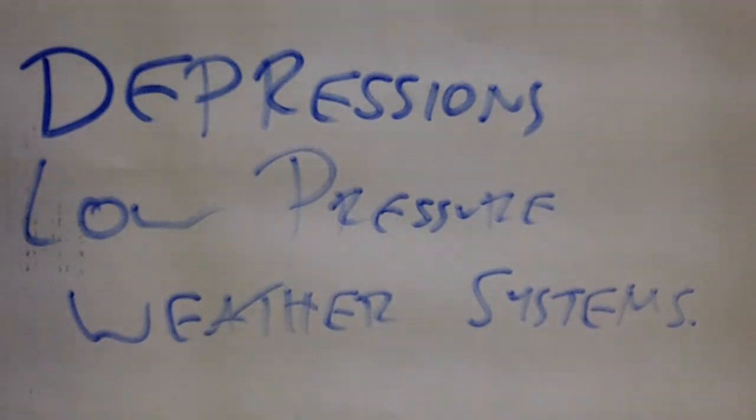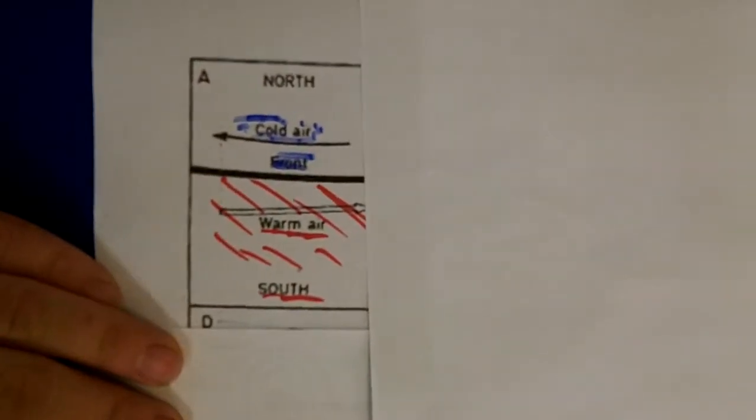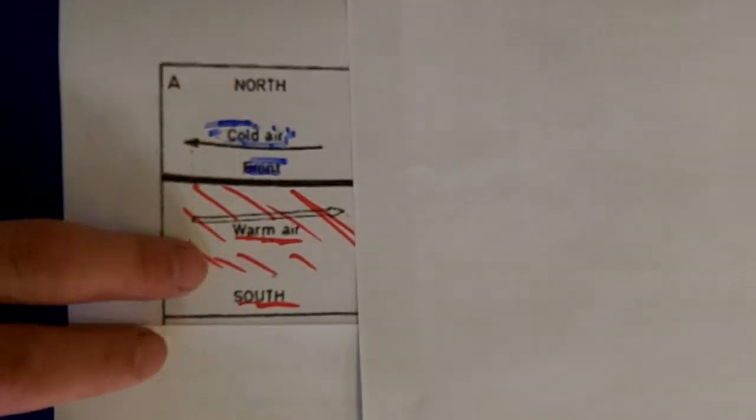I'm just going to run through how they form and then the kind of weather you'd expect to find at each point. So, if we start off with this, you start off with two cells. You've got your polar cell, you've got your Ferrel cell.